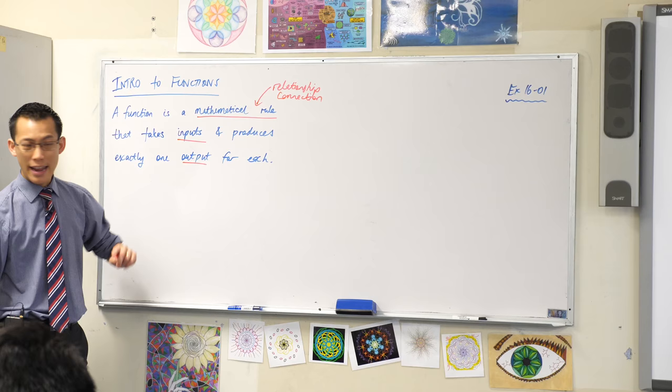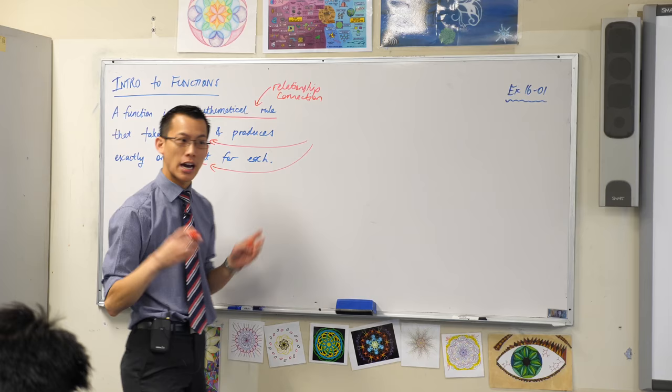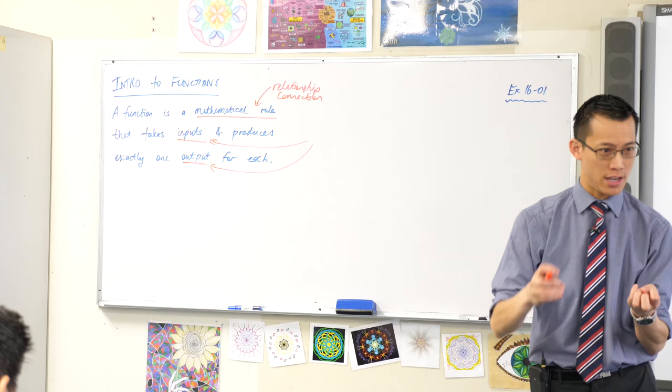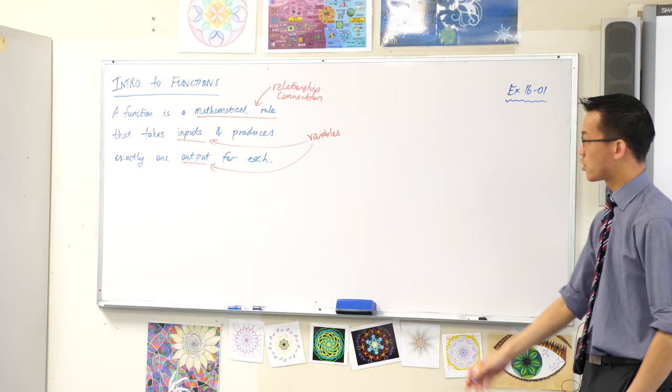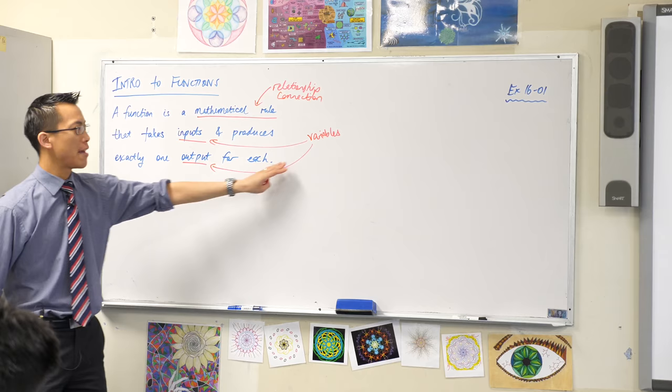The other idea connects to these two words, inputs and outputs. So we have a particular word that you already know that covers both of these. They're values that can change. When you've got values that can change we call them, it starts with a V, does anyone know? We call them variables because, as the word suggests, they vary. Variables, as opposed to constants, change. The idea here is you change the input, you change the output. They both vary.